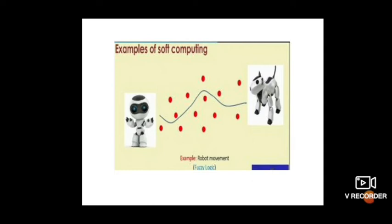The last example is robot movement. We have a robot with a target destination, and there are obstacles along the path. The robot has a source and a destination, and it needs to navigate around obstacles to reach the target. The algorithm used to solve this type of problem — where we have a source and destination with uncertainties — is fuzzy logic. So, to summarize: handwritten character recognition uses artificial neural networks, optimization to choose the best option uses genetic algorithms, and navigating from source to destination uses fuzzy logic.